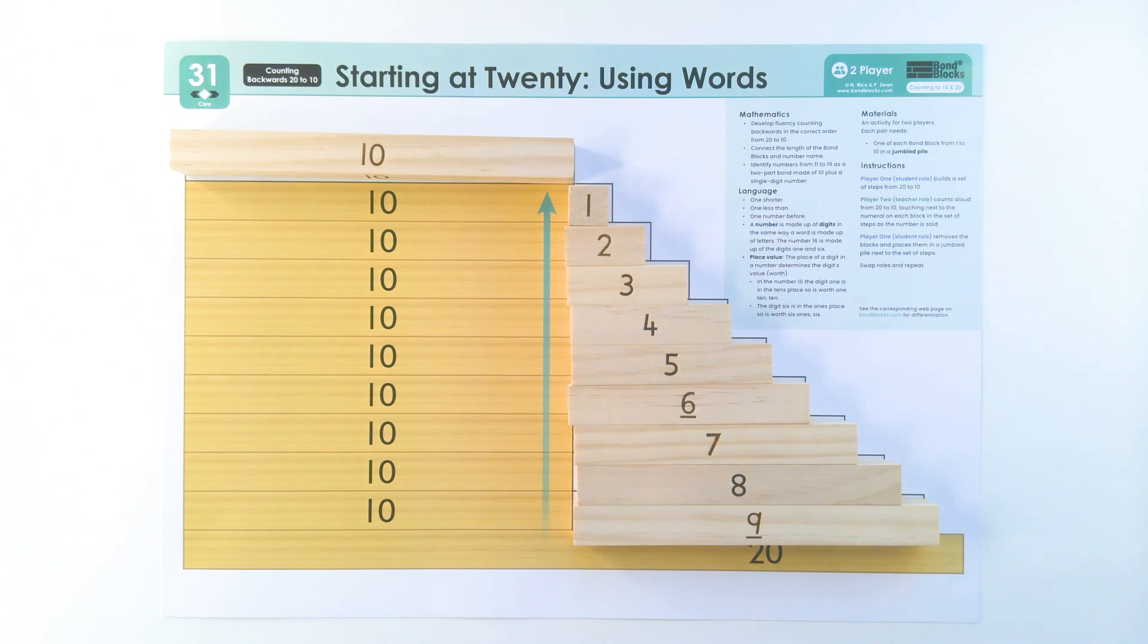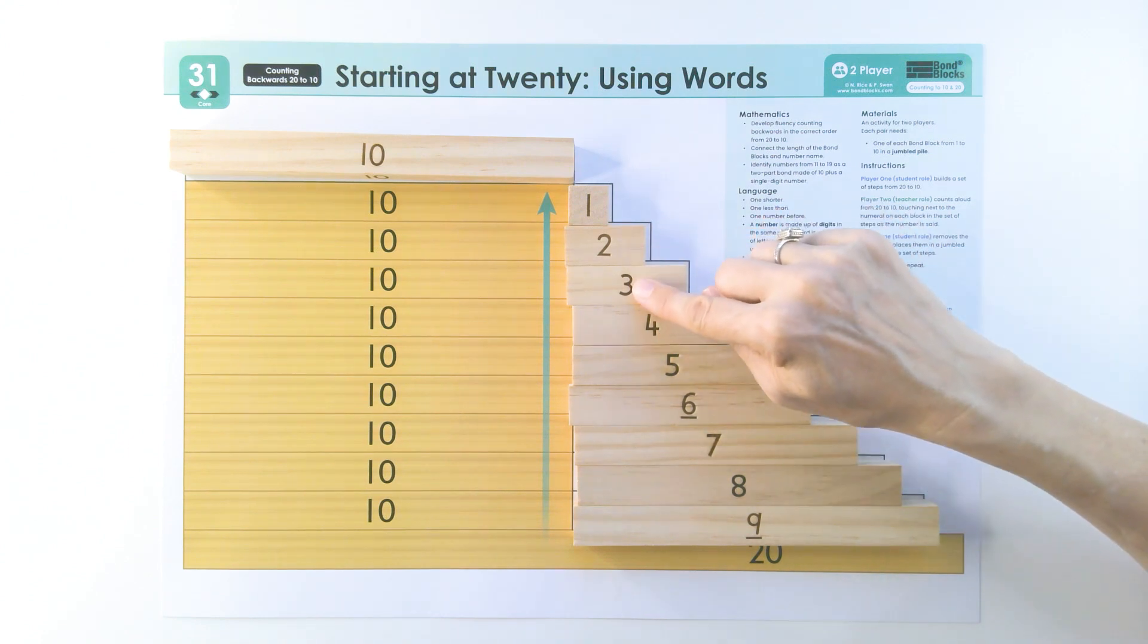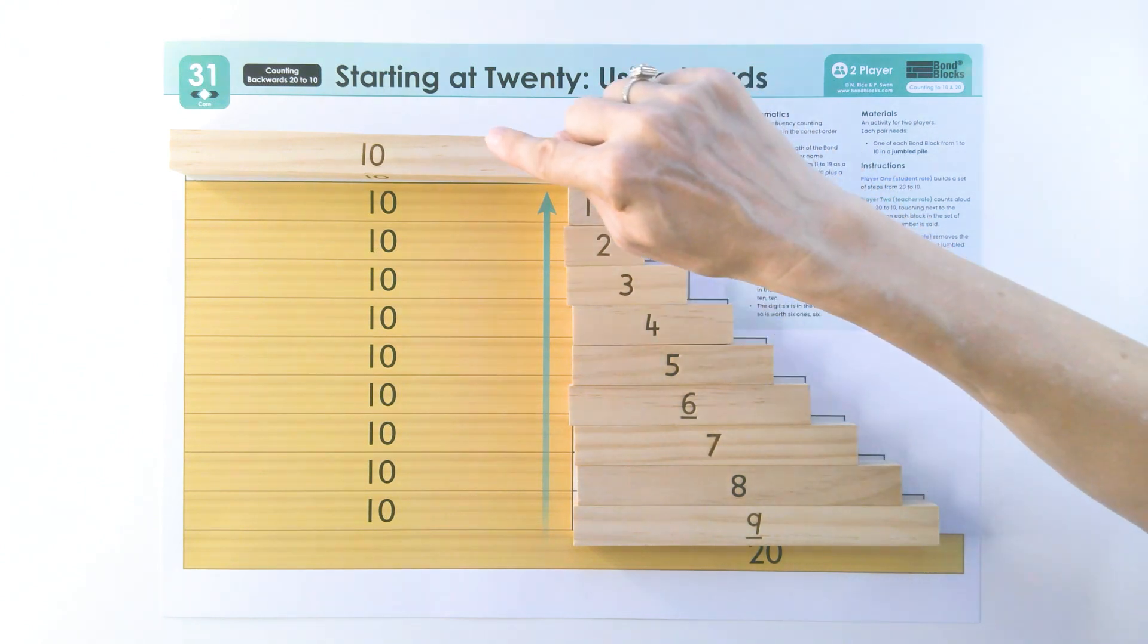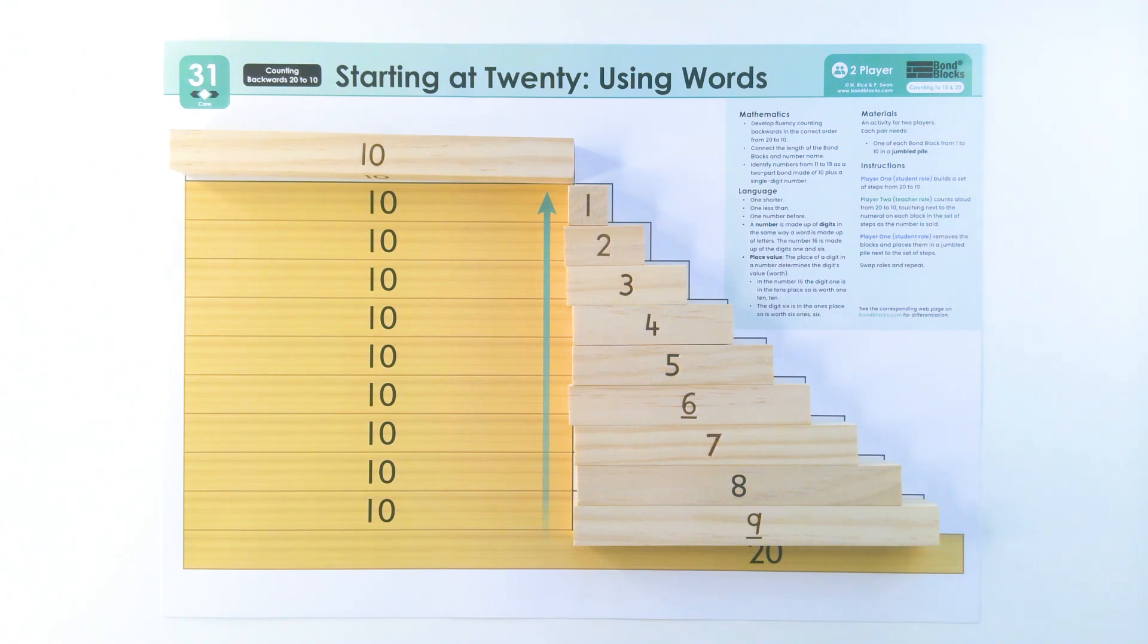I'm player two so I'll go first. I'm going to count backwards from 20 to 10 pointing. 20, 19, 18, 17, 16, 15, 14, 13, 12, 11, 10. Now we're going to swap. So you jumble them up.